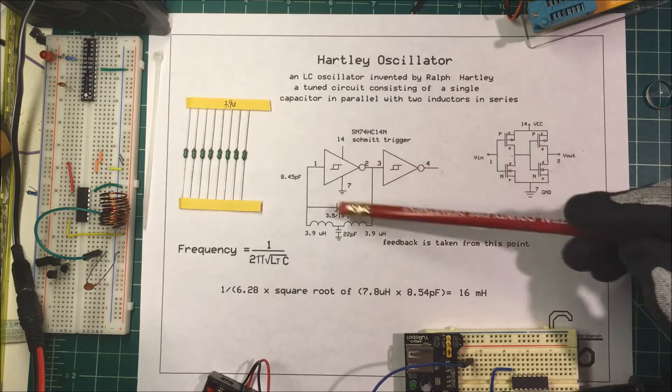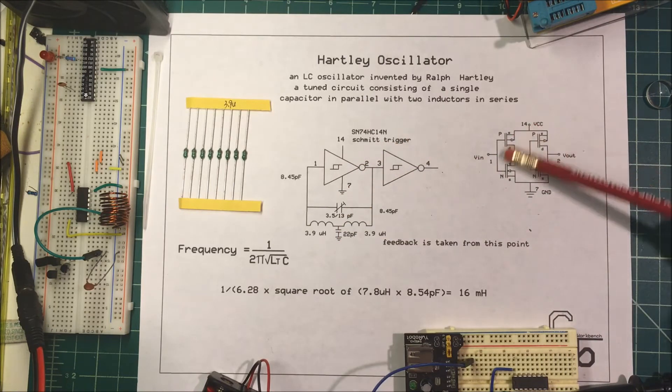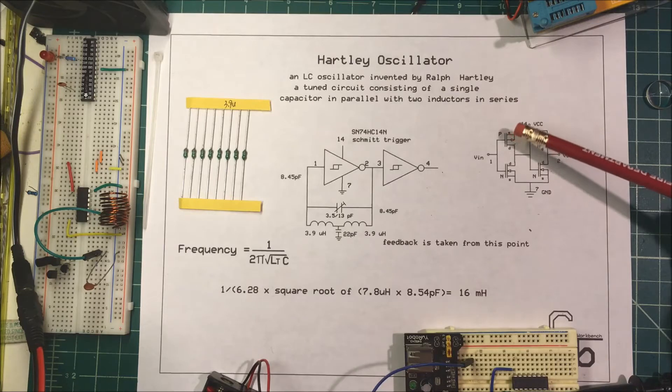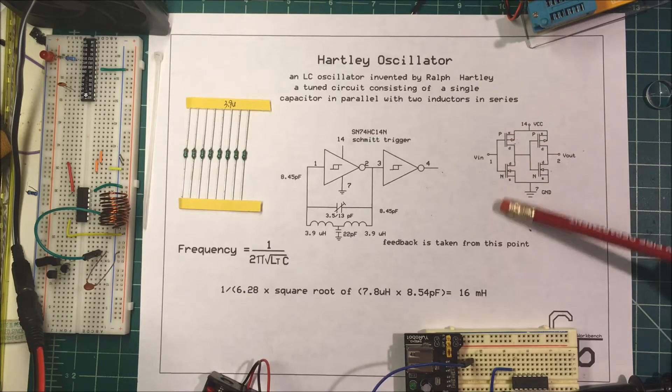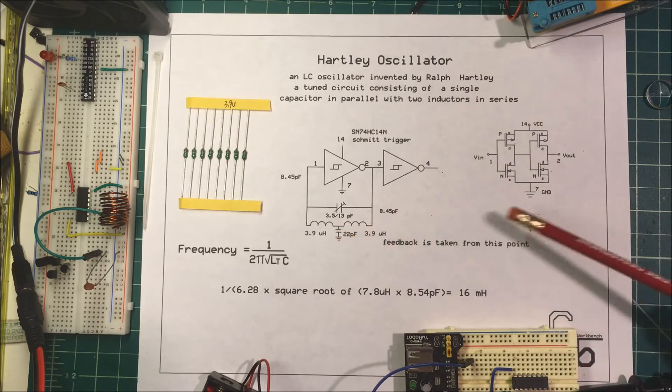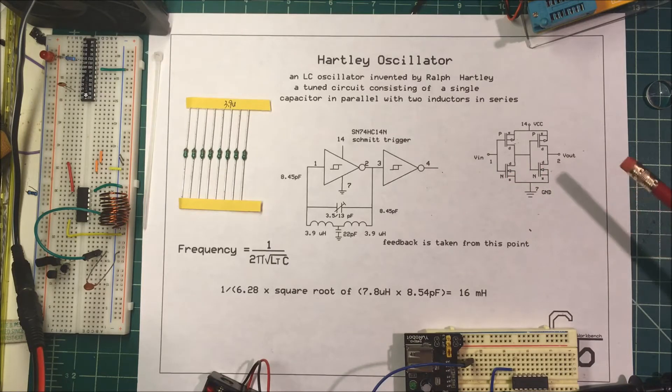Now, in order to feed this voltage back into these Schmidt triggers, this is a representation of what it looks like inside. I think most of them have, these are CMOS FETs and most of them have two P channels and maybe two N channels over here. But they take this voltage off the coil and they feed that back into the source of these N channel FETs to control the frequency better.